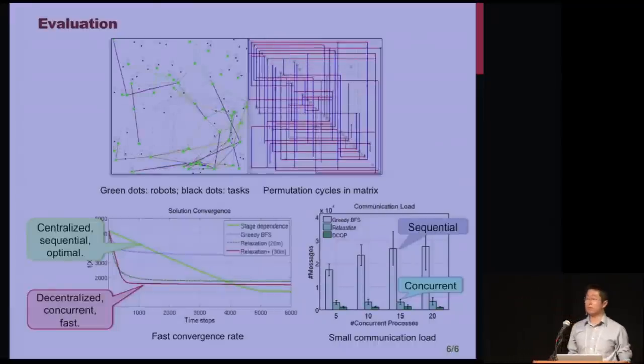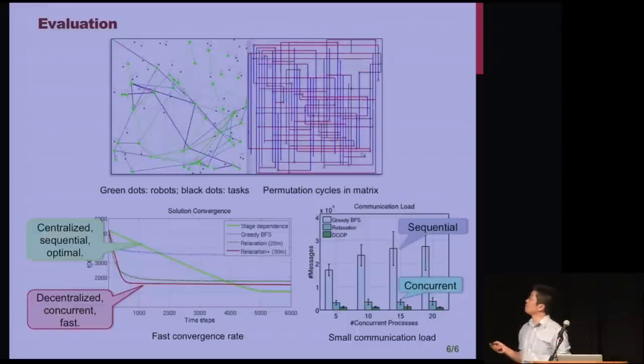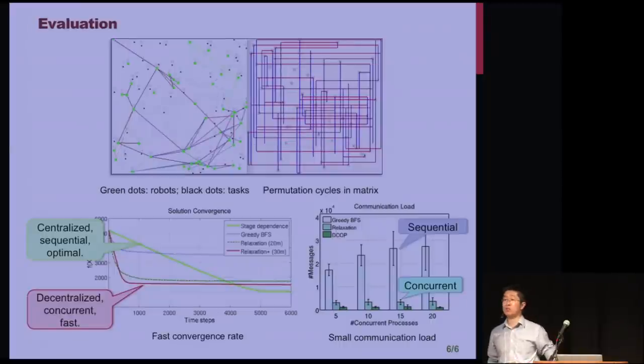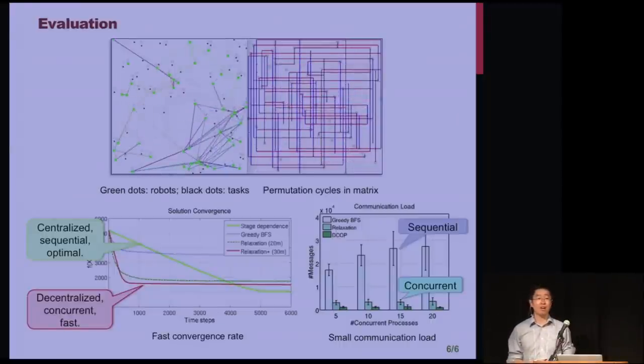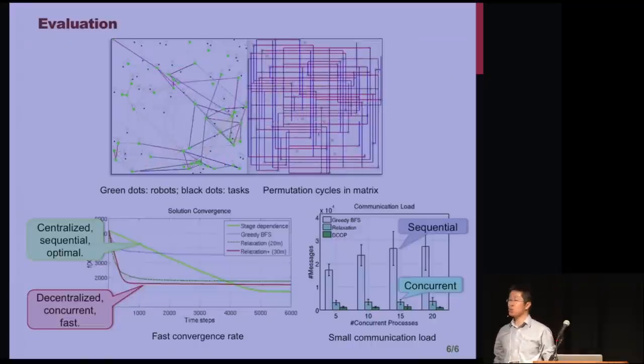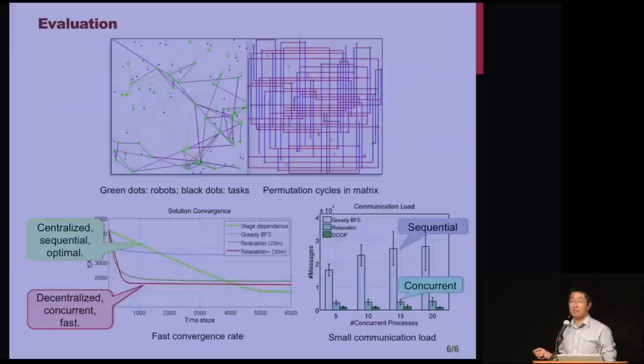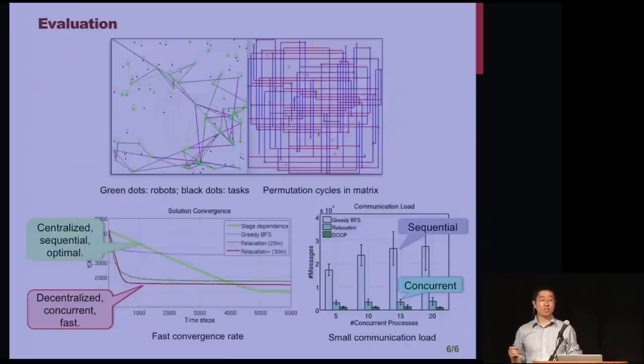Different from many other algorithms that assume global information or multi-hop communication, our permutation cycles are searched directly on the network topology. So we combine the duality theory and the relaxation searching technique and prove that the local searching is optimal in terms of the step size. Finally, we evaluated our method in simulation. So this algorithm is based on static network topology. The left figure shows the randomly generated locations for robots and the tasks. And the right figure shows the permutation cycle in the assignment matrix. Comparing with the sequential and centralized version as shown in the green line, we can observe that the decentralized version converges much faster at the red line and the solution is also close to the optimum. We also show that the relaxation technique also reduces the communication load. And this is my talk and thank you for your time.